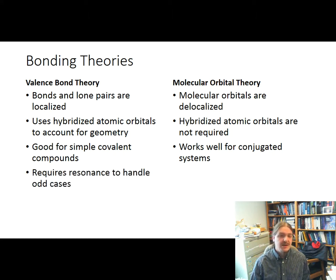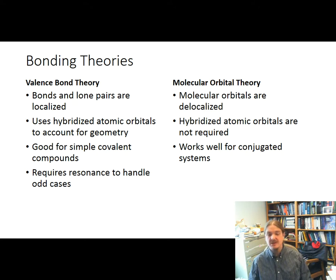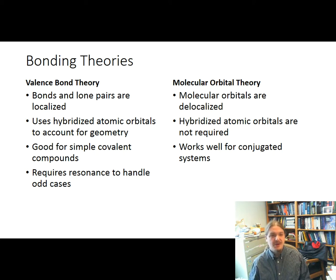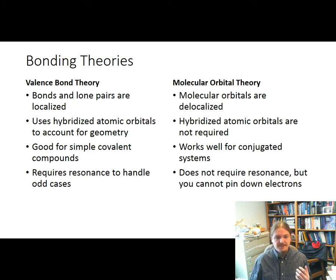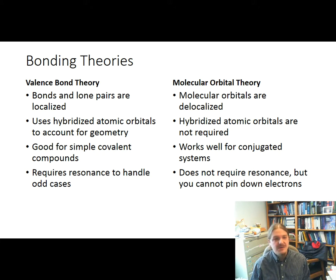Valence bond theory requires resonance to handle odd cases. The cases that lead to requiring resonance are actually places where valence bond theory breaks down. Because valence bond theory wants electron pairs to be localized, resonance is introduced to handle cases where we know electron pairs are delocalized. Molecular orbital theory, because all of the orbitals are delocalized anyway, does not require resonance to handle that situation. But it lacks that feel-good conceptual part of valence bond theory — it's harder to pin down where individual electron pairs are in a molecular orbital theory picture of a molecule.